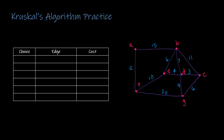Here's a practice for you to do on your own — press pause, try the question, then press play to see how you did. My first choice would be whatever the cheapest edge is, which in this case would be three. So I'm going to add DC, which is three. From here, I'm going to add a four. There are two fours — I'll choose DG with a cost of four. Then I'm going to also add DE with a cost of four.